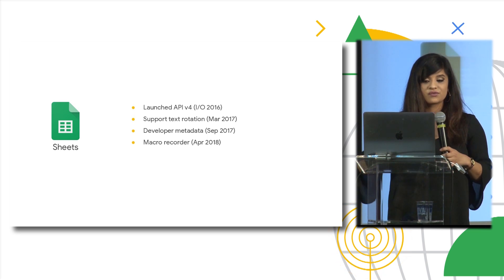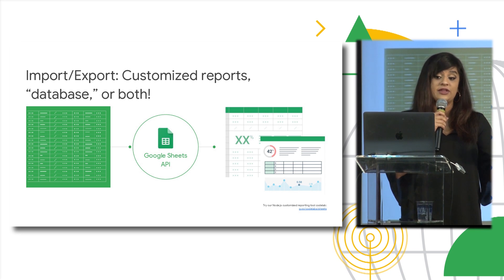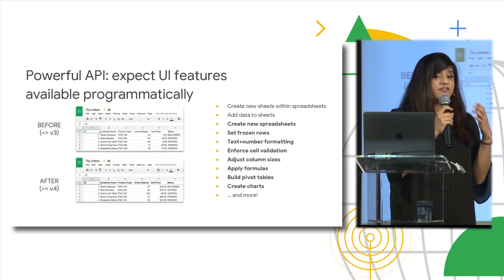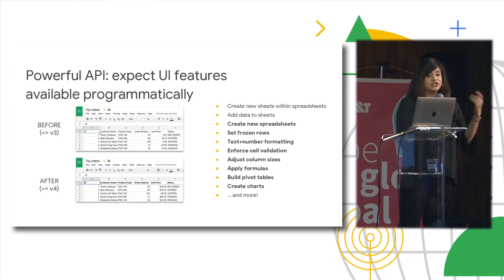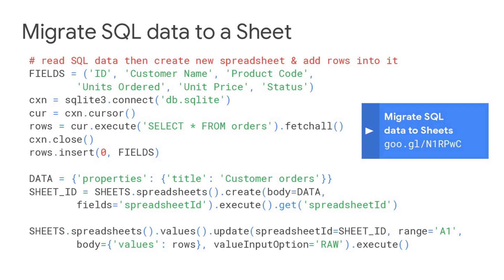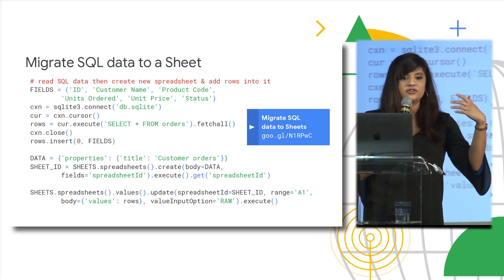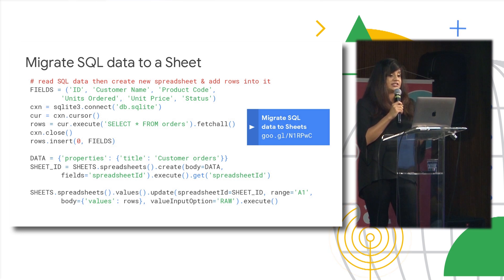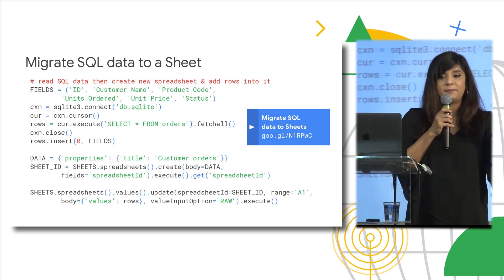Now onto Google Sheets — this is definitely the most popular application in G Suite. Sheets is a good in-between tool whether you're working with databases or just want to put your data in a sheet. Many of the things you can do in the UI you can automate with the Sheets API, and more features are being added. Let's look at how we might migrate SQL data into a sheet, since Sheets is a great collaboration tool. You can see the query right there — select star from that table — and with Sheets you can actually read and write back to that database.